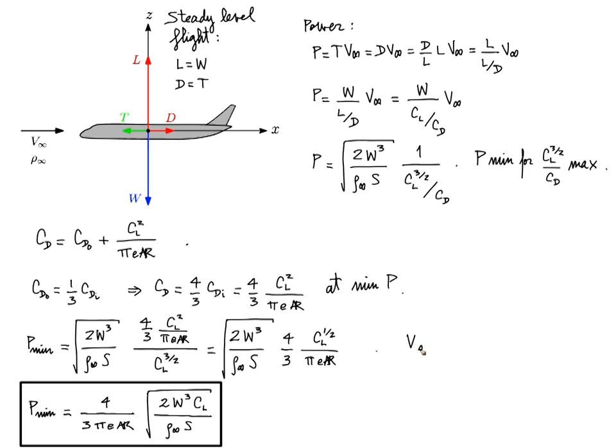First let me bring back the expression for the flight velocity and write it this way. So the flight velocity depends on the ratio of weight to wing surface area. This is called the wing loading, and it's an important parameter in aircraft design.